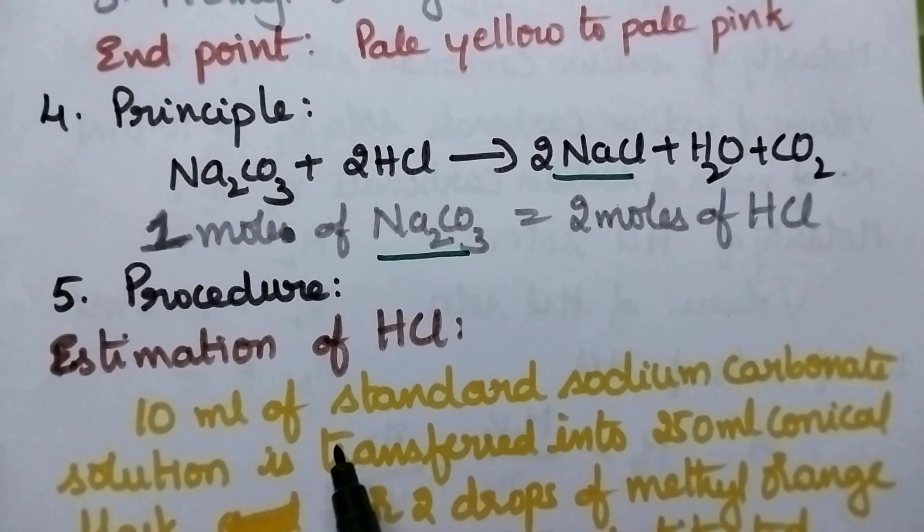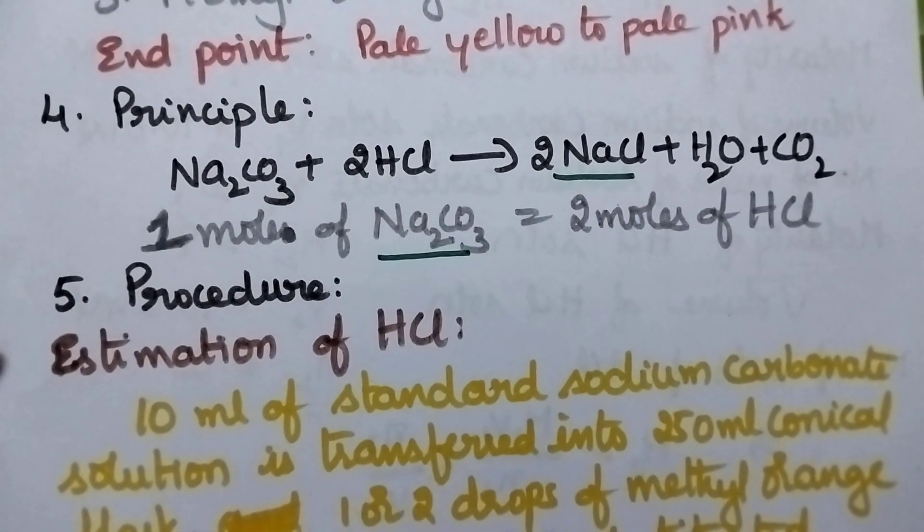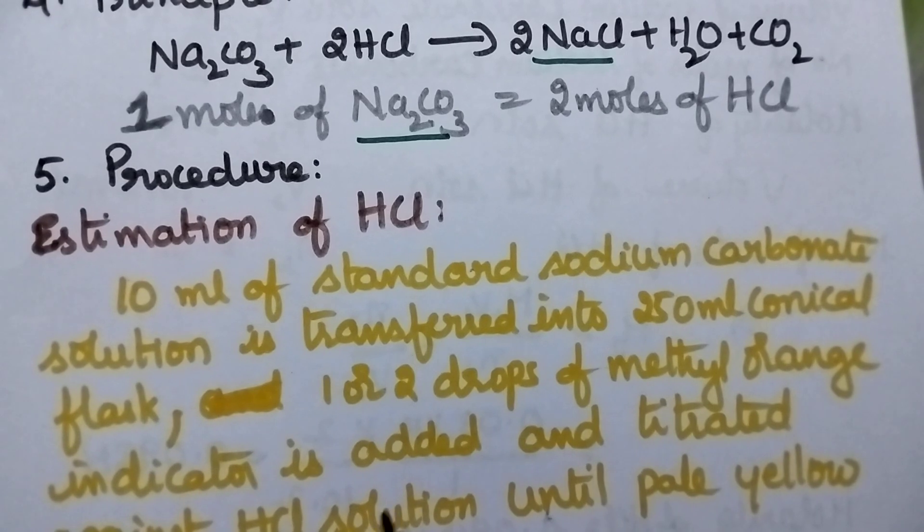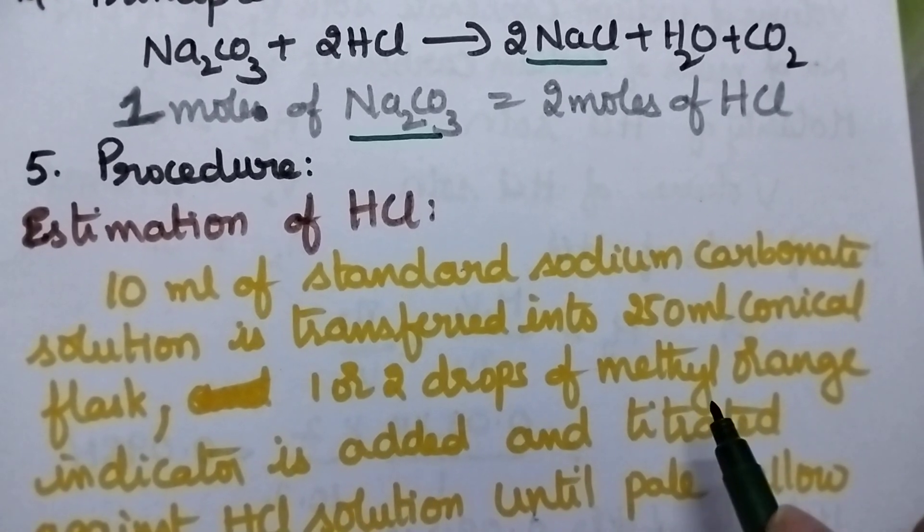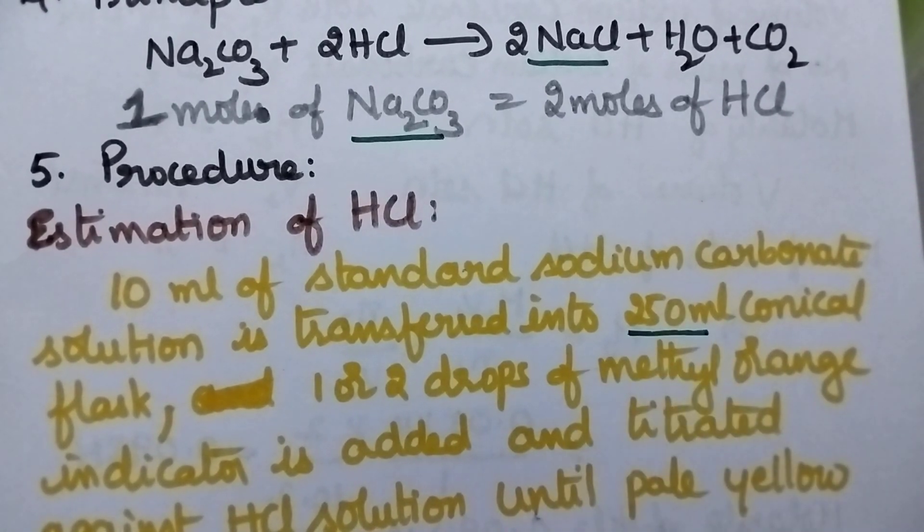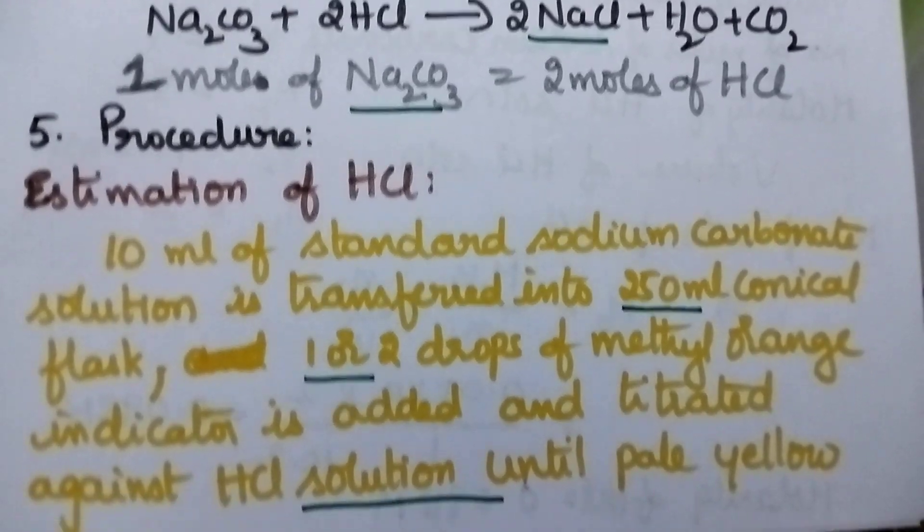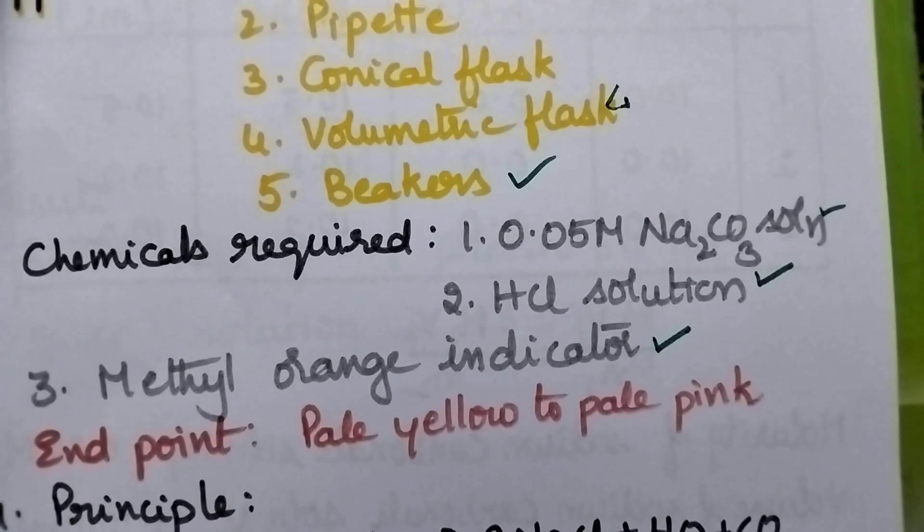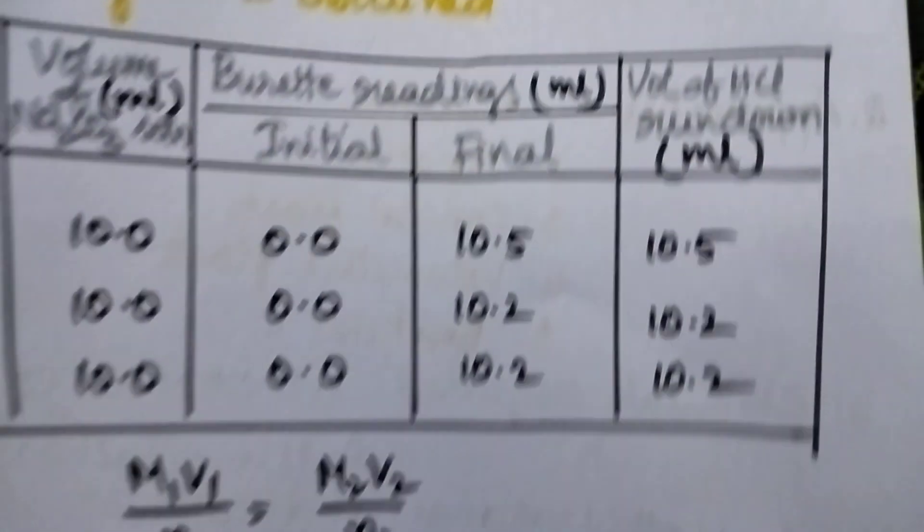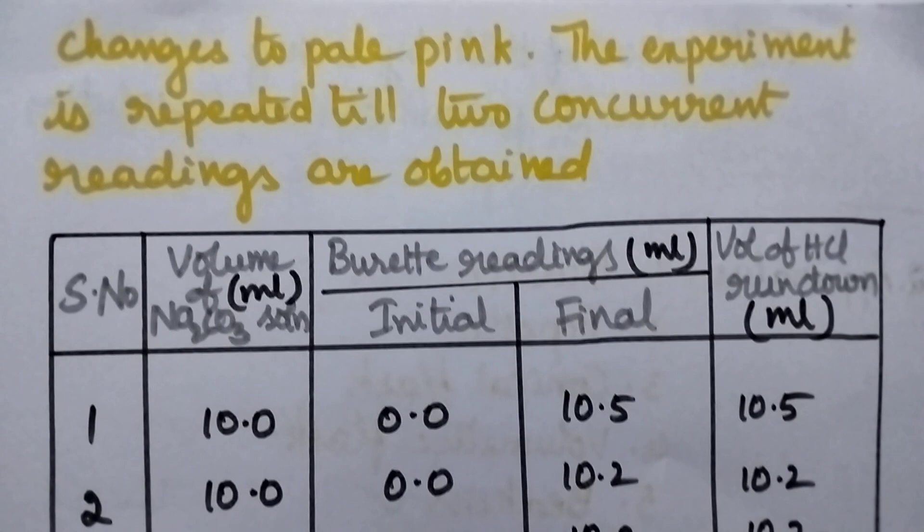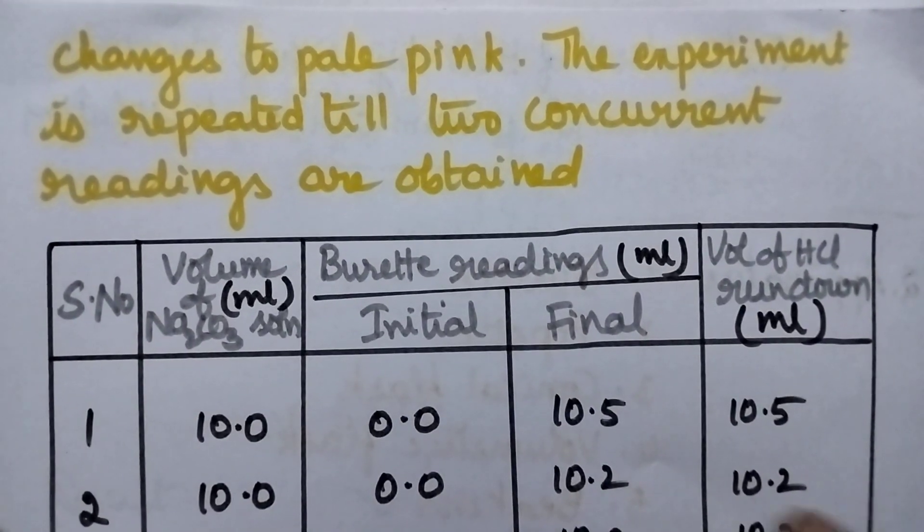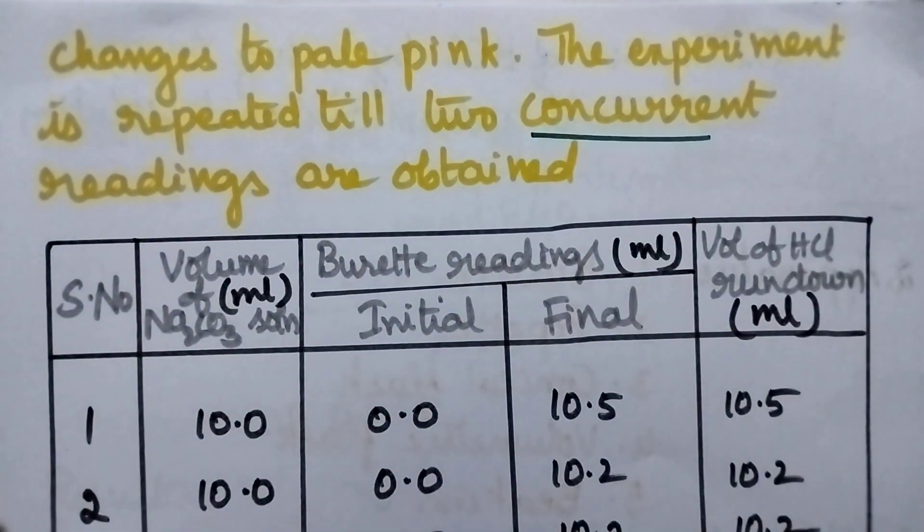Coming to the procedure, it involves the estimation of HCl. Initially 10 ml of the standard sodium carbonate solution is transferred into 250 ml conical flask. To that 1 or 2 drops of the methyl orange indicator is added and the solution is titrated against HCl solution till a pale yellow solution is changed into pale pink color solution. And the titration is repeated until 2 concurrent readings are obtained.